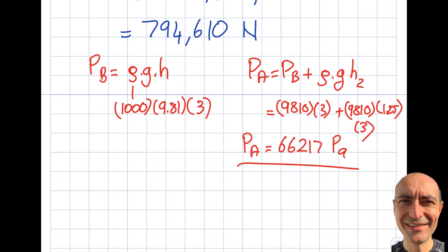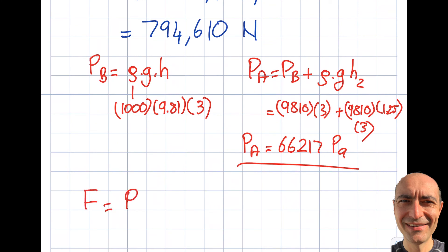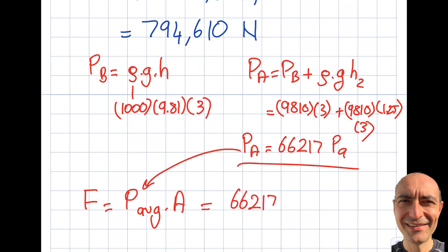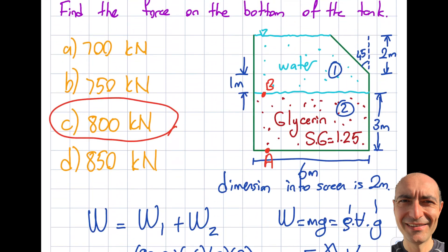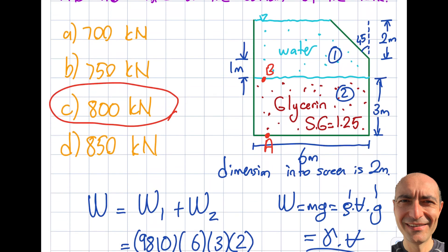The pressure-force relationship is straightforward: Force = P_average times Area. Since pressure is uniform across the bottom, P_average = 66,217 Pa. Multiplying by the area (width 6 times depth into page 2) gives 66,217 times 12 = 794,610 Newtons — exactly the same answer. So the correct approach is to include all fluid layers all the way to the free surface. If you're ever confused, just use the second approach: find the pressure, multiply by the area. Thank you for watching.